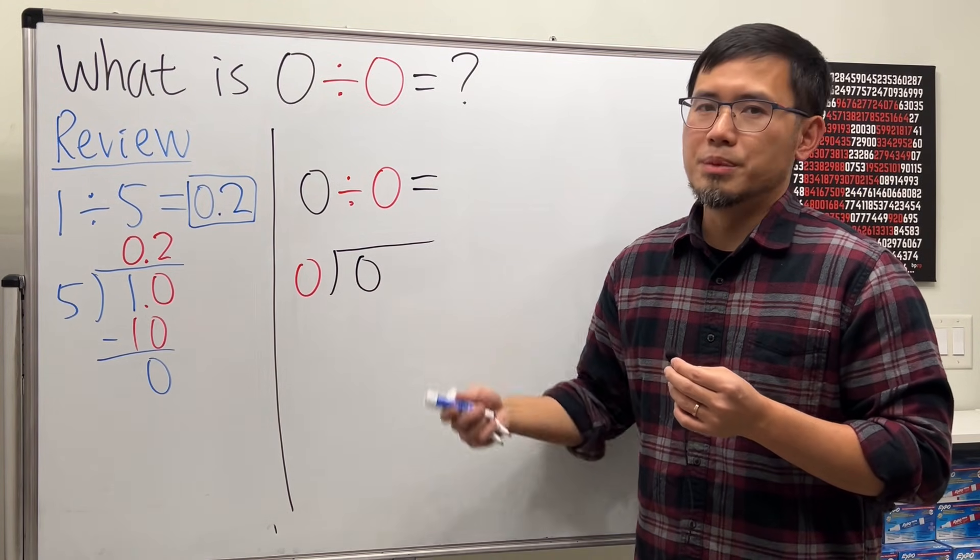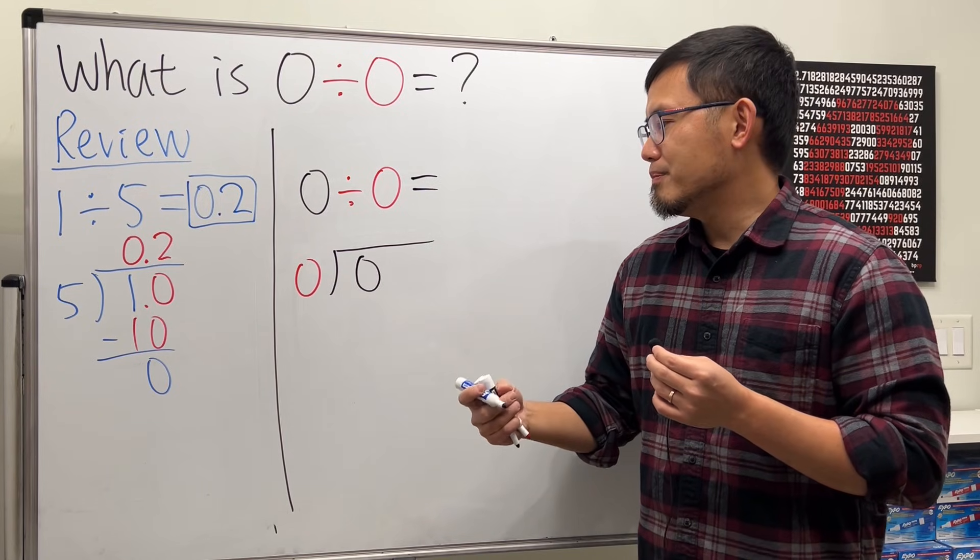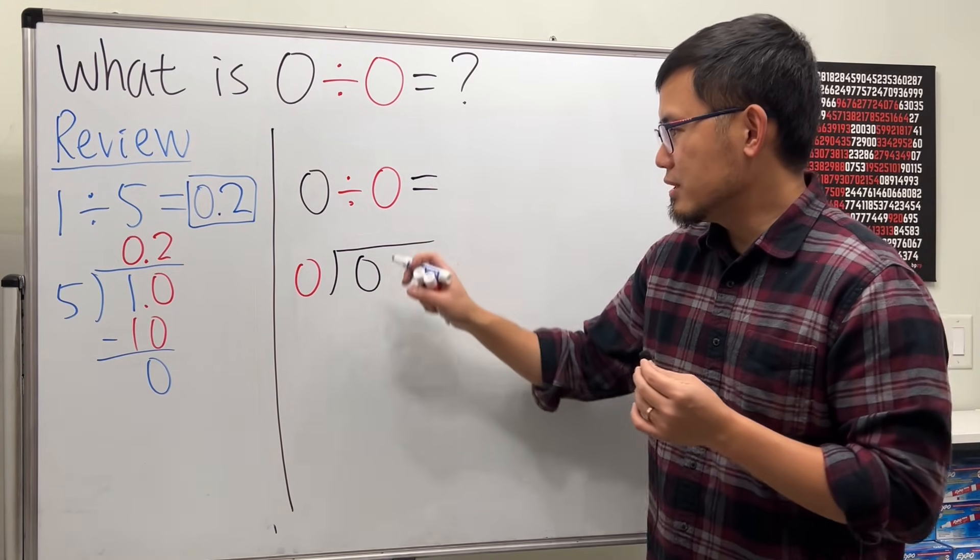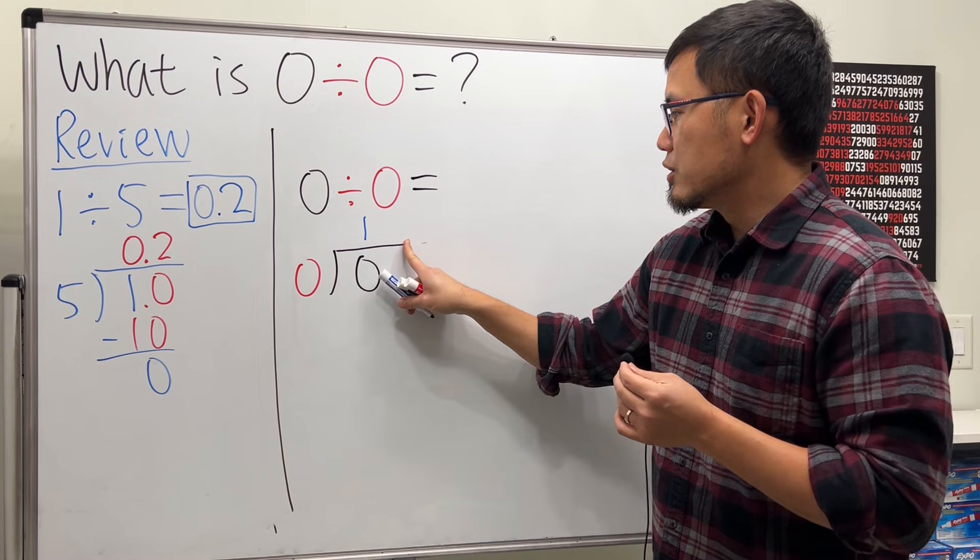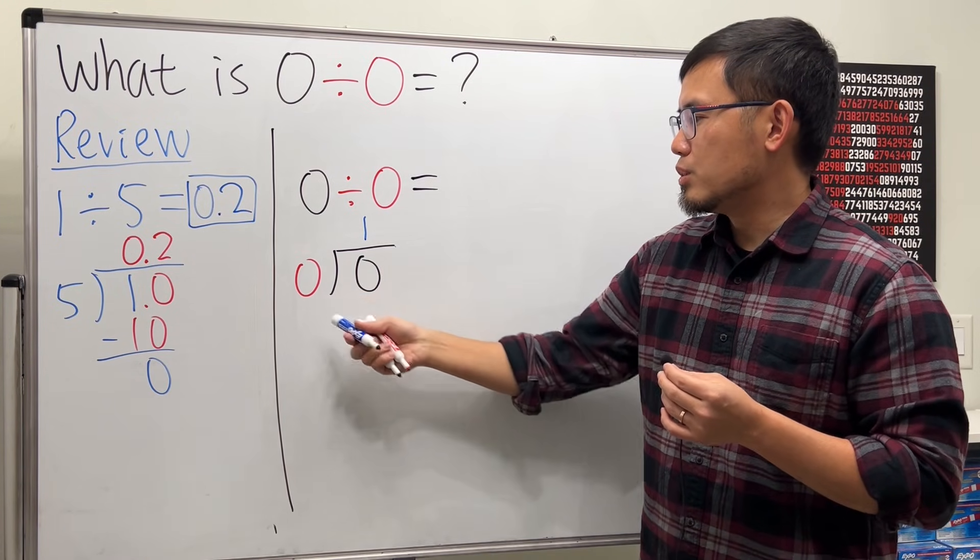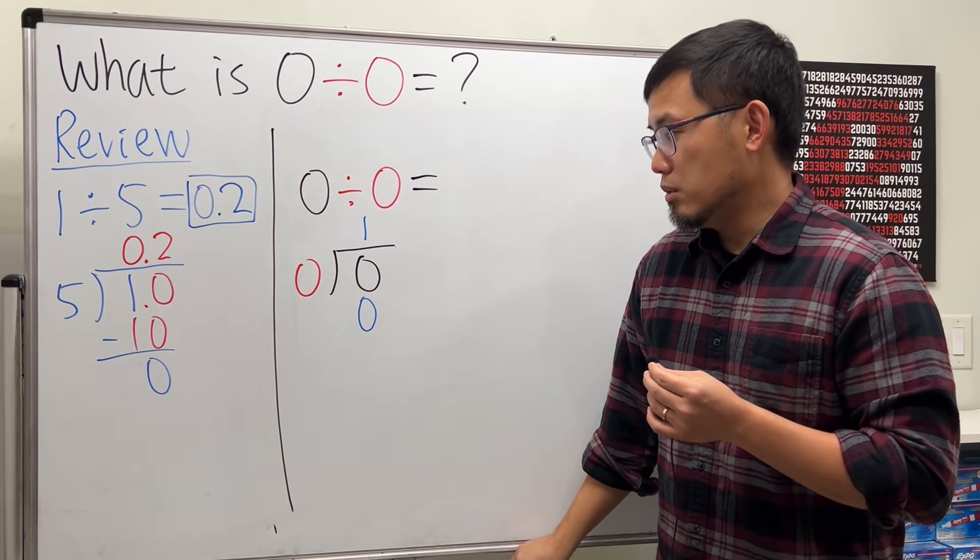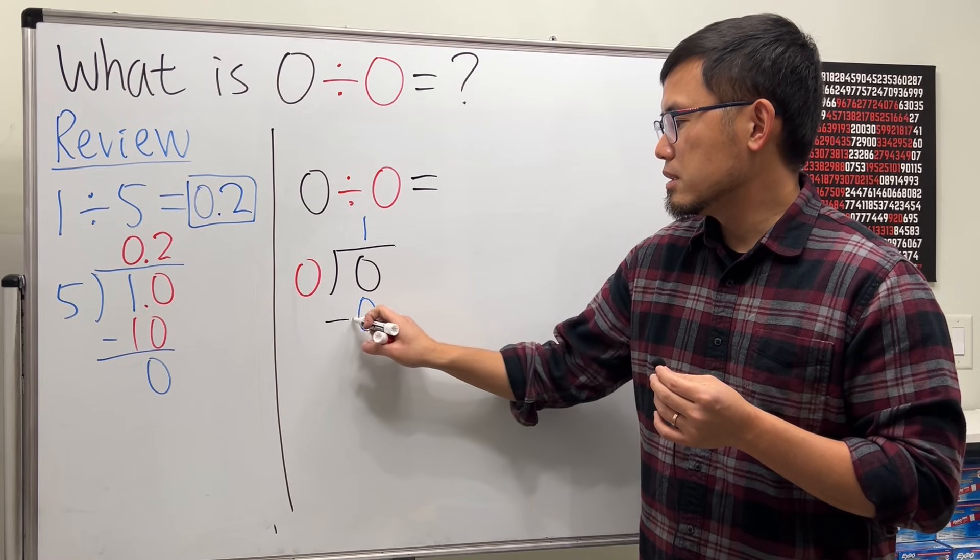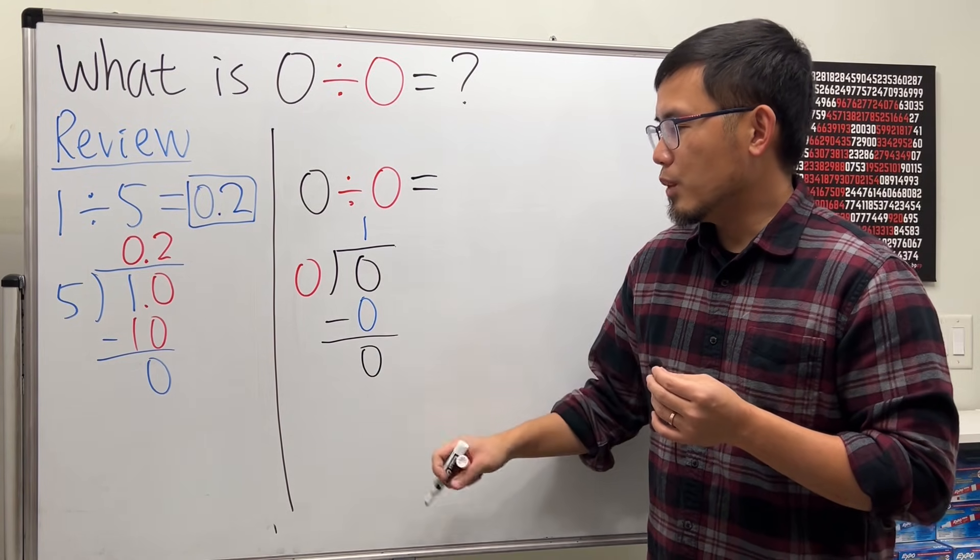One maybe, right? Just like what we said earlier. So maybe it's one. One times zero does give us zero, and then when we subtract, hey, we end up with zero just like that.